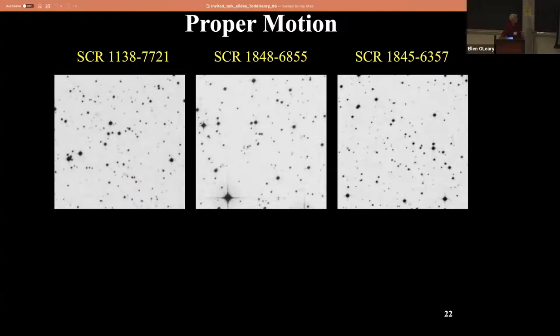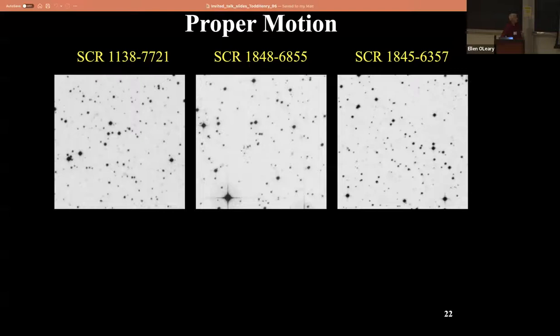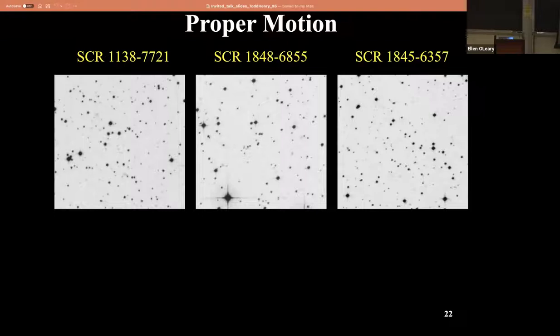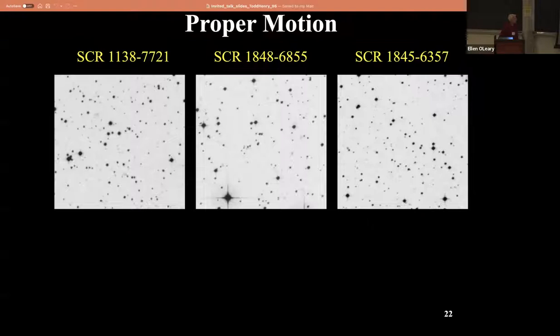The one on the right - the actual dot is that one, so it's really moving at three o'clock. What happened there? There are some plate defects. I didn't tell you the twist: one of those is a blue image and one is a red image, and this is a very red object, so the brightness changes. Keep in mind that stars have colors.